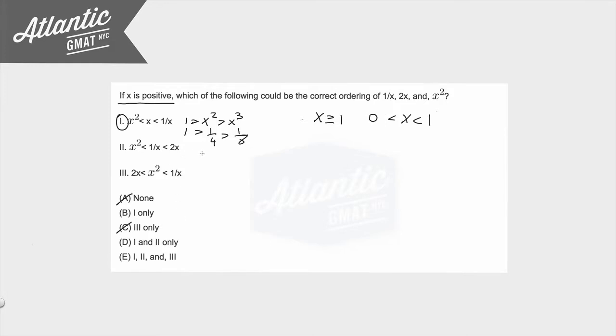For statement 2, I would do the same thing. I would flip it around and I would multiply by x. And I can already see that plugging in positive integers is going to be problematic because of this.